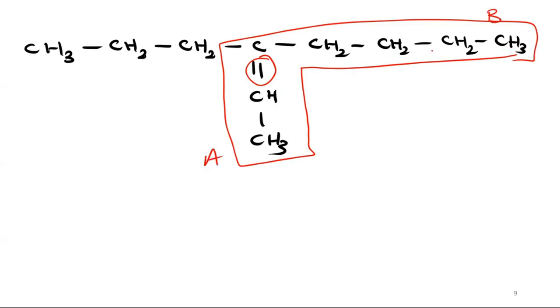And how will the number be, A or B? What was the rule? Number the longest carbon chain from the end which is closer to the carbon attached to the double bond. So, A.